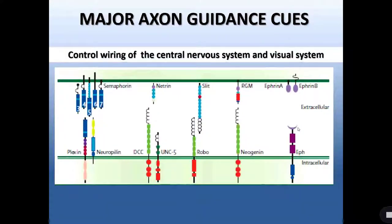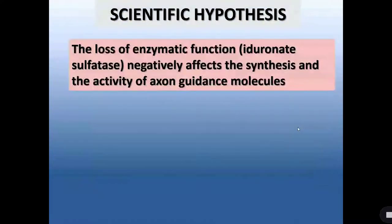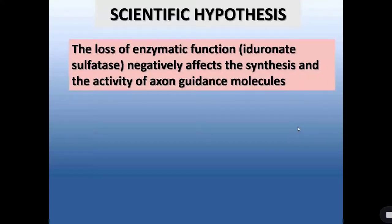Some of these guidance molecules are called with particular names. For instance, semaphorins derive their name from the Greek word 'sima' meaning signal and 'fora' meaning to carry, while netrin derives its name from the Sanskrit word meaning 'one who guides.' During our investigation, we thought that the loss of activity for iduronate-2-sulfatase, the enzyme implicated in mucopolysaccharidosis type 2, could negatively affect the synthesis and activity of these guidance molecules during early development.